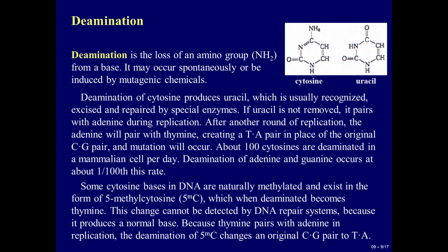Deamination is the loss of an amino group (NH2) from a base. It may occur spontaneously or be induced by mutagenic chemicals. Deamination of cytosine produces uracil, which is usually recognized, excised, and repaired by special enzymes. If uracil is not removed, it pairs with adenine during replication. After another round of replication, the adenine will pair with thymine, creating a TA pair in place of the original CG pair, and a mutation will occur. About 100 cytosines are deaminated in a mammalian cell per day.